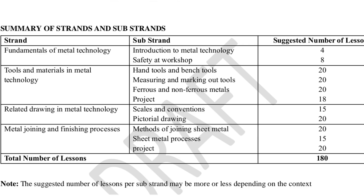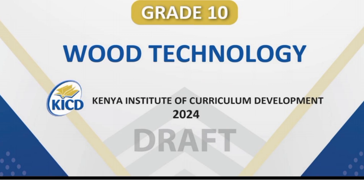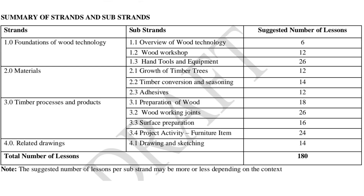Wood technology is also available. The first strand is foundation of wood technology, covering overview of wood technology, wood workshop, and hand tools and equipment. The second strand is materials, with substrands: growth of timber trees, timber conversion and seasoning, and adhesives. The third strand is timber processes and products, covering preparation of wood, woodworking joints, surface preparation, and a project activity — furniture item. The fourth strand is related drawings, covering drawing and sketching. This learning area is covered in 180 lessons per academic year.